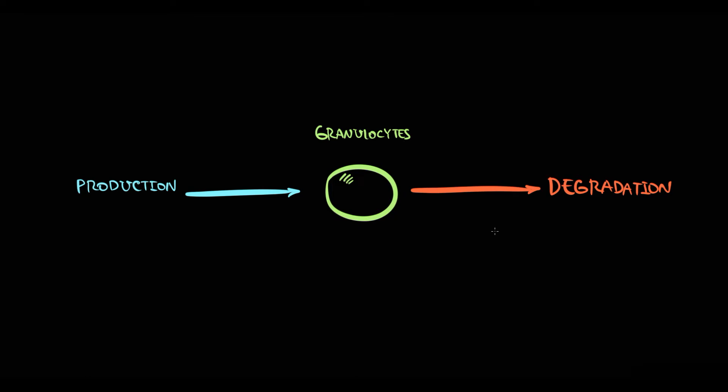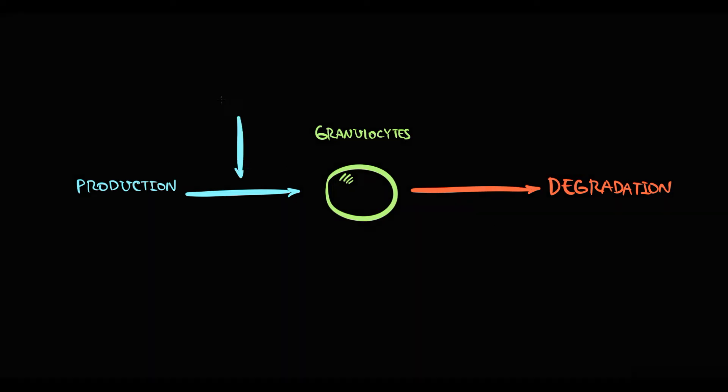Basically, the amount of granulocytes in the blood is determined by granulocyte production and degradation. So to decrease the amount of granulocytes in the blood, we have two options. We can stimulate the degradation of granulocytes, or we have to decrease their production. And to decrease the production of granulocytes, we use Imatinib.